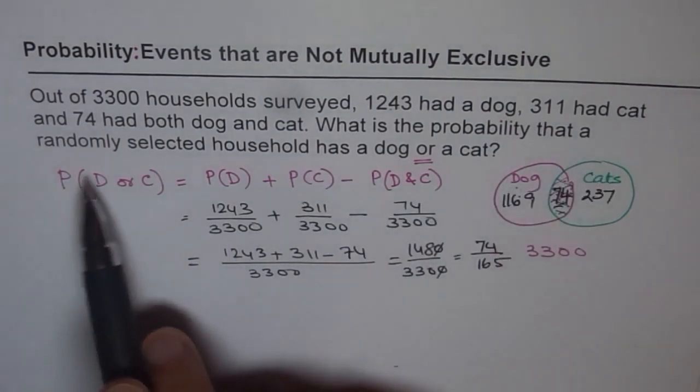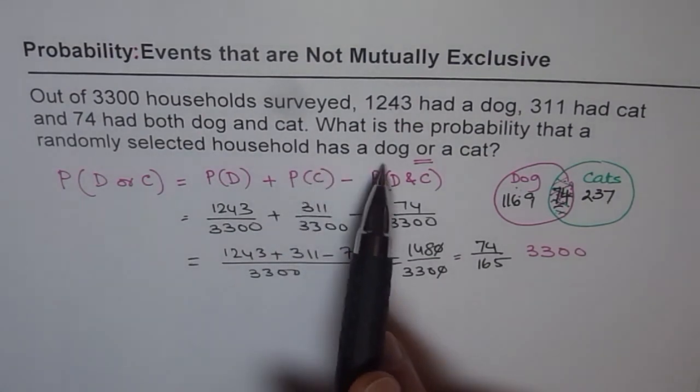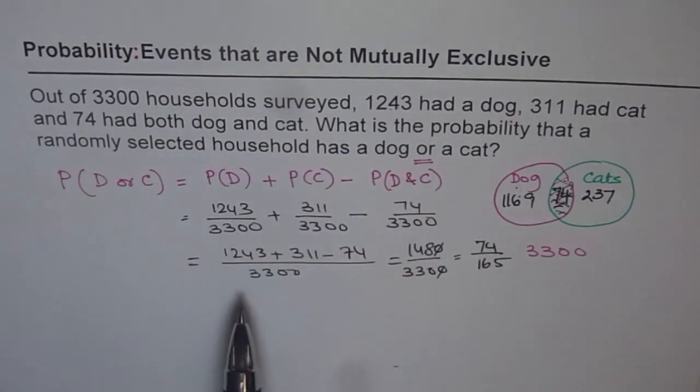So that is the probability of a household. So what is the probability that a randomly selected household has a dog or a cat? It is 74 over 165. So that is how we are going to answer it. Thank you.